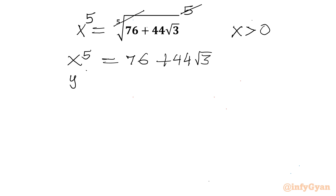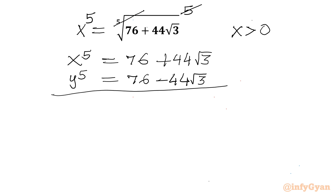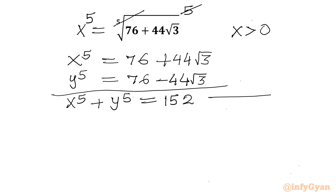Let us consider y power 5 also, which will be equal to 76 minus 44 root 3. Let's add both equations: x power 5 plus y power 5 will be equal to 76 plus 76, which is 152. I will call this equation 1.